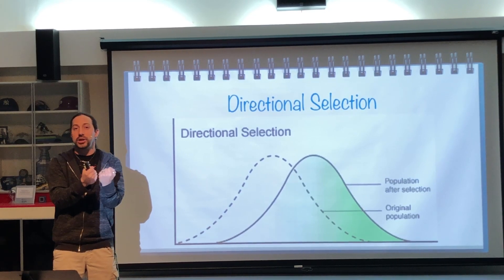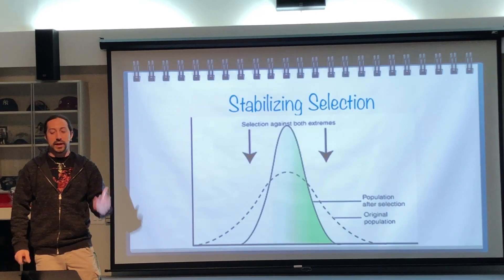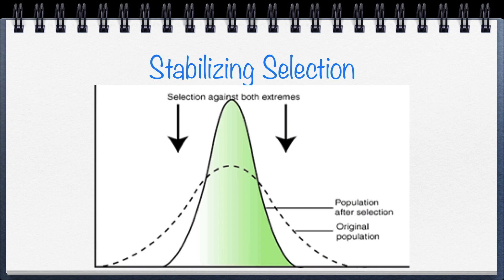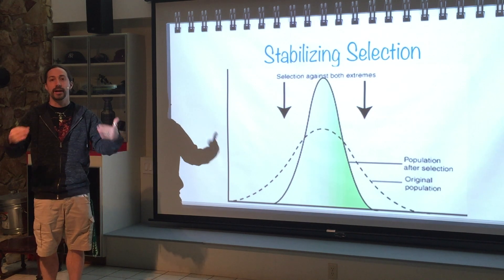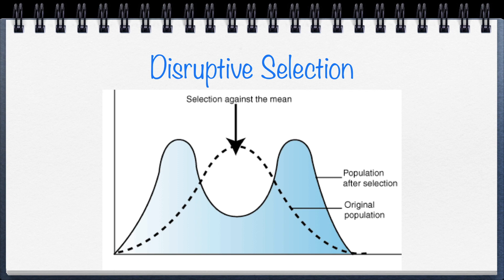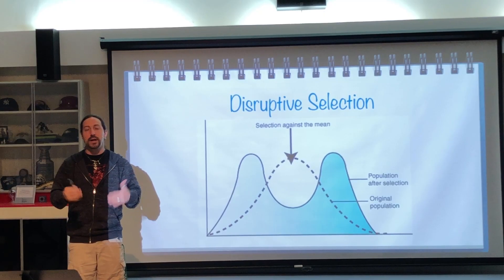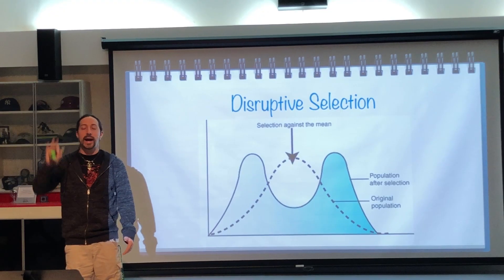In stabilizing selection, the average trait is favored — whatever the majority of organisms had is what does really well and passes its genes to the next generation. In disruptive selection, it's the exact opposite: the average does extremely poorly. Organisms with average traits are unable to pass on their alleles, meaning the extremes — the non-average alleles — are favored and do much better, so the population shifts toward the extremes while the average starts to disappear.